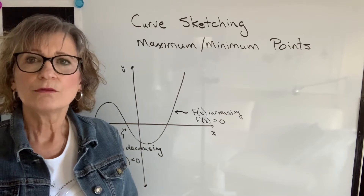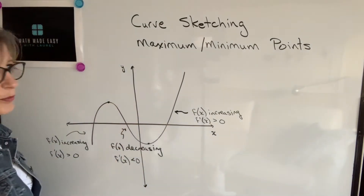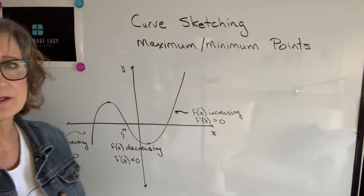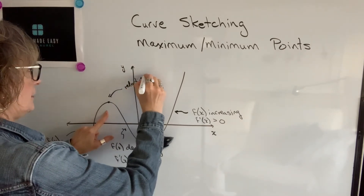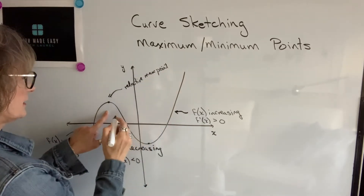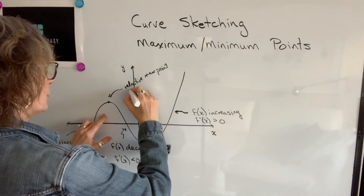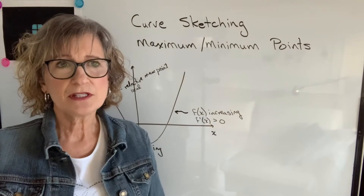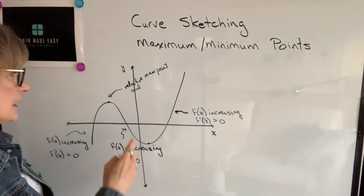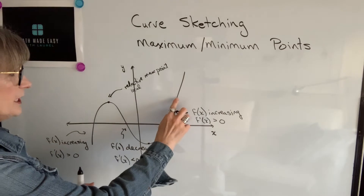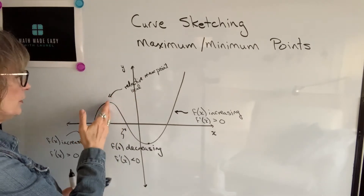We also want to know where the function changes from increasing to decreasing, or decreasing to increasing — and it will be at these special points. These are called extreme points, and in particular this one would be called a relative max point. The reason it's called relative is that it's relative to all of the points around it. You might also hear the word local max point. When you see global max point, they're talking about a maximum point for the whole function. This isn't the maximum point for the whole function because we have some values of y that are greater over here.